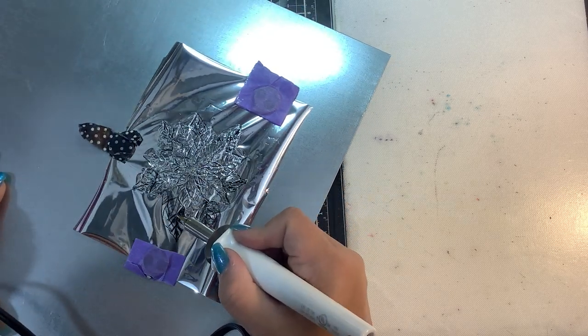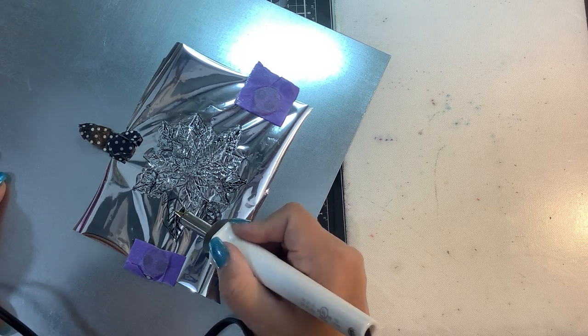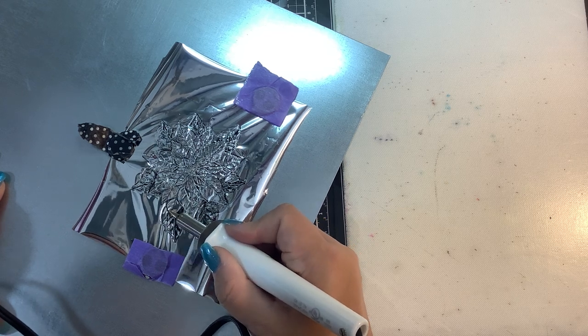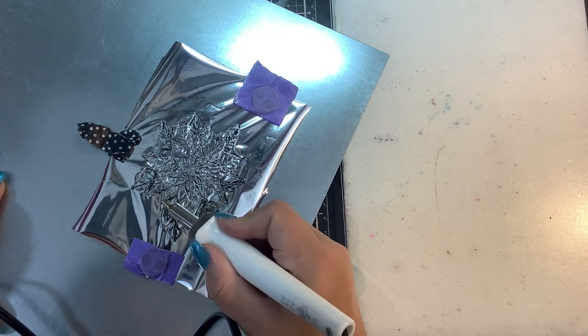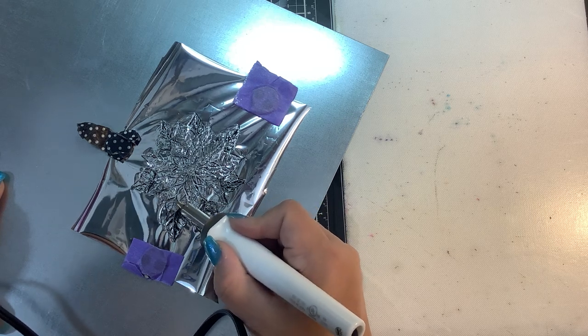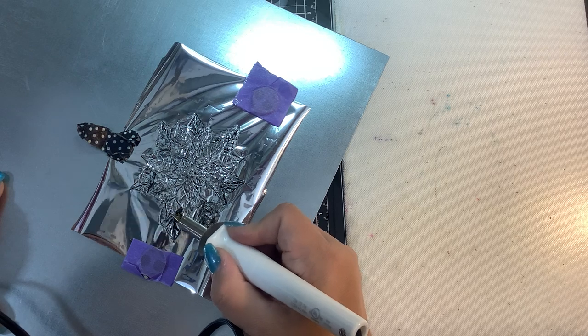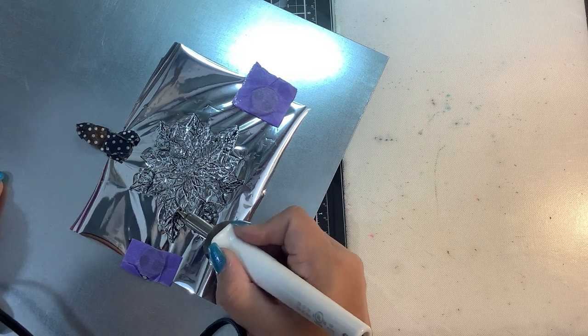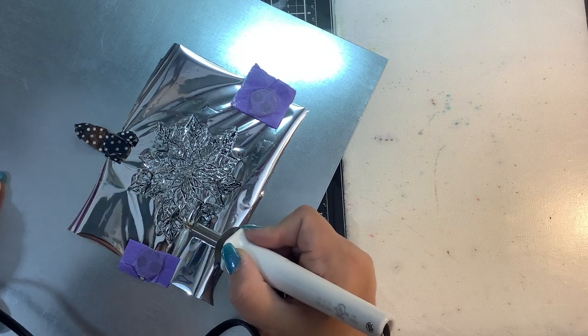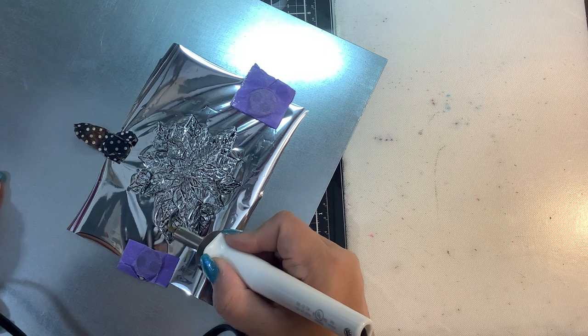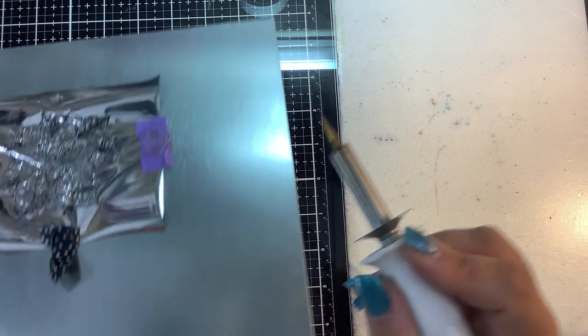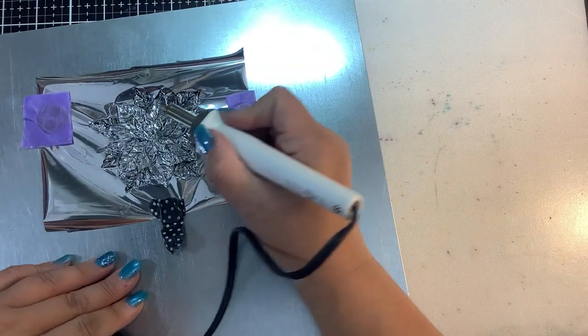And then you can color this in with watercolor markers. You can color it in with color pencils. You can just leave it foiled. Whatever you want to do. This is going to be a super thin, thin line of foiling. I think I would prefer a thicker, a more bold design if it were me, just so that the foiling would really stand out. But, I think this is going to be super cool. We are almost done here. It's going to be a little sloppy because, again, in my haste here, I'm just kind of quickly doing this.